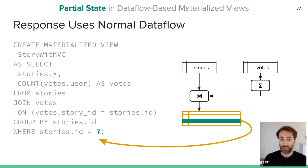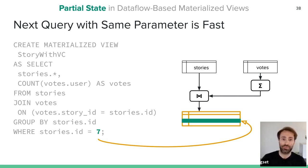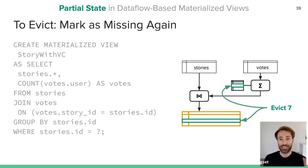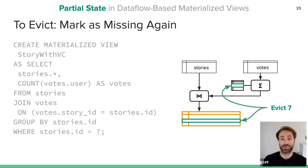Once state is populated for key 7, later queries for the same value can be served directly from the materialized view. At some later point, if story 7 becomes old and unpopular, we can evict that entry — and any related internal state in the aggregation — freeing memory to materialize results for more popular stories.